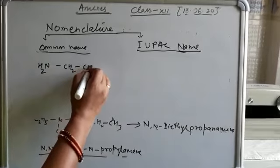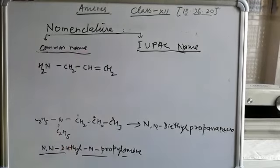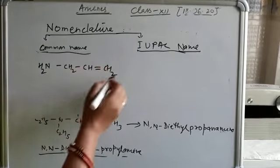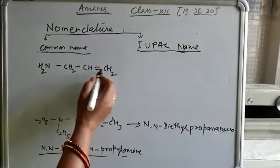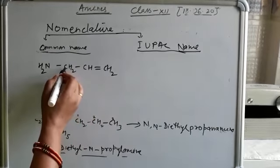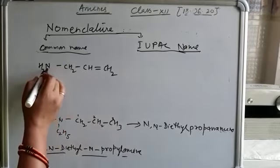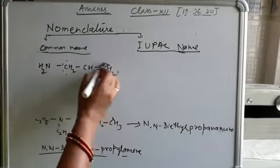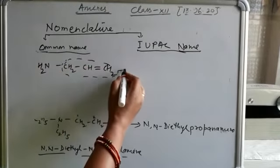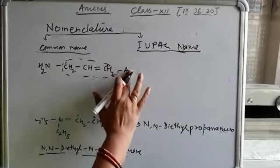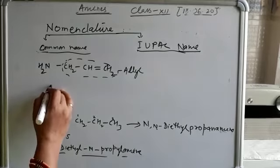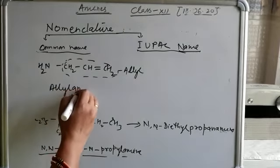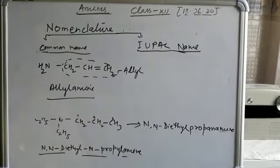Another example: NH2–CH2–CH=CH2. This is a first-degree amine. The carbon chain with a carbon-carbon double bond adjacent to which the functional group is attached is known as the allyl group. This is the allyl group. The common name of this compound is allylamine.